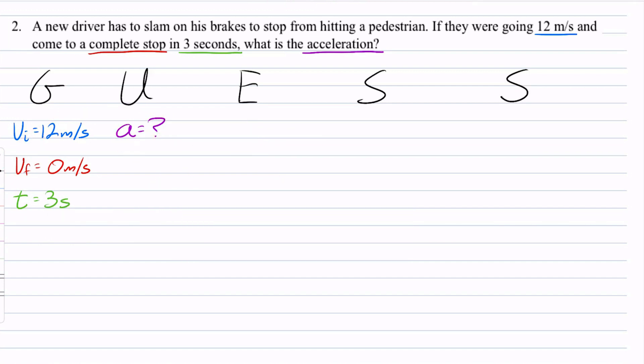And so again, in this case, we are looking at A being equal to V final minus V initial, and that is over time.